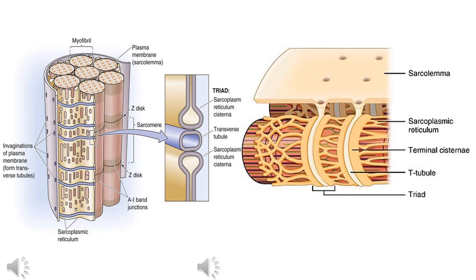Actin and myosin form fiber-like strands known as myofibrils. Looking at two diagrams, the myofibril elements on the left are covered by the purple membrane known as the sarcolemma. The holes in the sarcolemma invaginate through the cell making what are known as T-tubules or transverse tubules. Surrounding the myofibrils are pockets of calcium known as the sarcoplasmic reticulum, seen here in yellow.